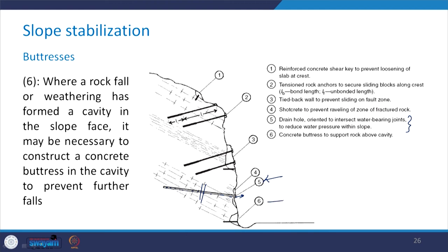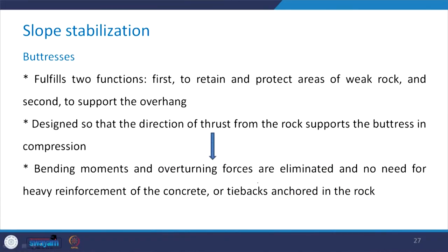The sixth measure is the provision of buttresses, as shown here — concrete buttresses to support the rock which is above a cavity. In cases where rock fall or weathering has formed a cavity in the slope face, it may be necessary to construct a concrete buttress in the cavity to prevent further falls. These buttresses fulfill two functions: first, to retain and protect areas of weak rock; second, to support the overhang that forms when a cavity is created.